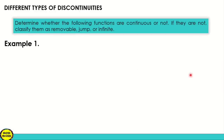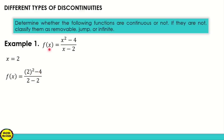Determine whether the following functions are continuous or not. If not, classify them as removable, jump, or infinite. For example number 1, f of x equal to (x² - 4) / (x - 2). We check the denominator: x must not equal 2. If x equals 2, we get 2² - 4 over 2 - 2, which gives 0/0 — indeterminate. So the function has removable discontinuity.